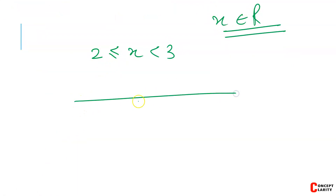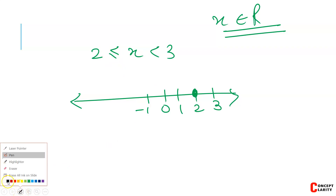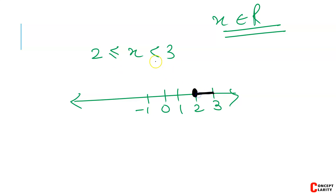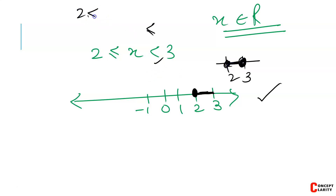Now, since x belongs to the real numbers, when we plot on a number line, we mark minus 1, 0, 1, 2. For x less than or equal to 2, we place a filled dot at 2 and the line extends leftward. For the other condition, since it is strictly less than (not less than or equal to), we do not place a dot — we use an open circle. Let me change ink for better visibility. This will be your final answer on the number line.